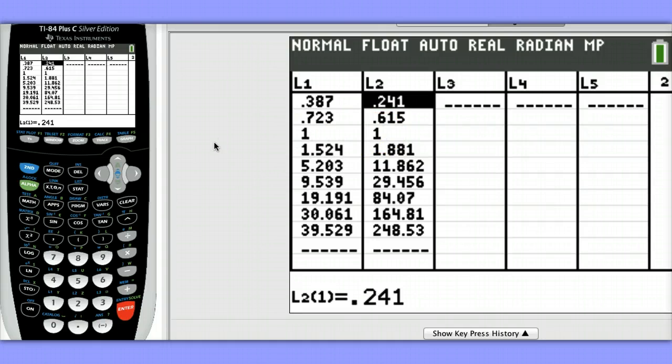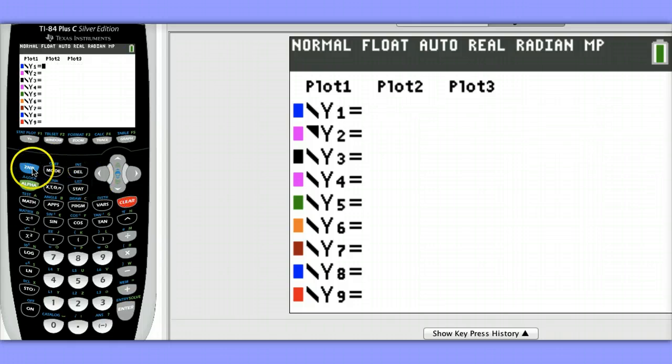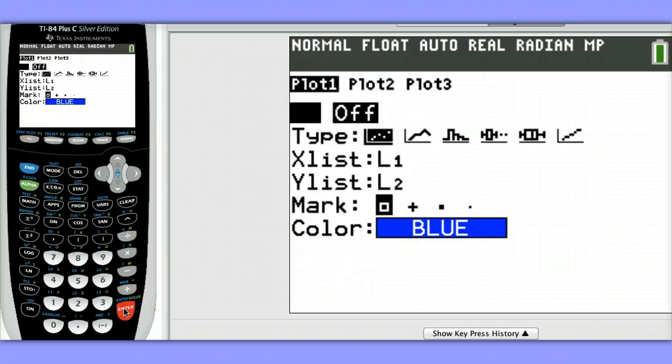Let's begin by taking a look at a scatterplot. I'm going to begin by hitting Y equals, and I'm going to clear out any equations I see here. We don't want them to be on our scatterplot, so hit Clear. Next, let's define our scatterplot. Hit Second, Y equals. We're going to turn Plot 1 on, so hit Enter. Hit Enter on On. Our type is scatterplot. Our Xs are on List 1, our Ys are on List 2, and we're ready to go.